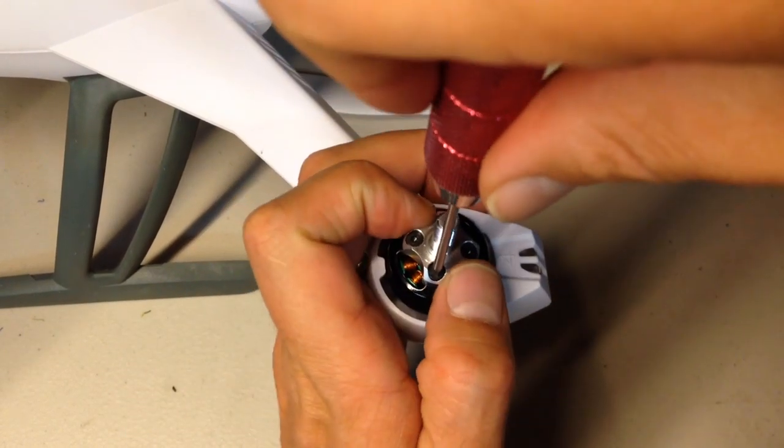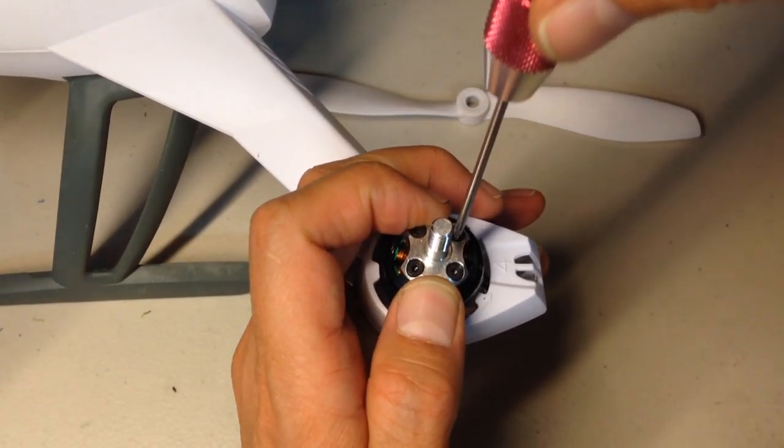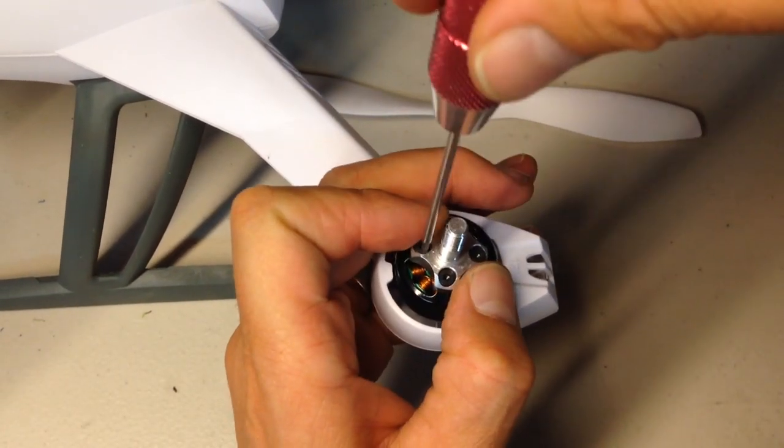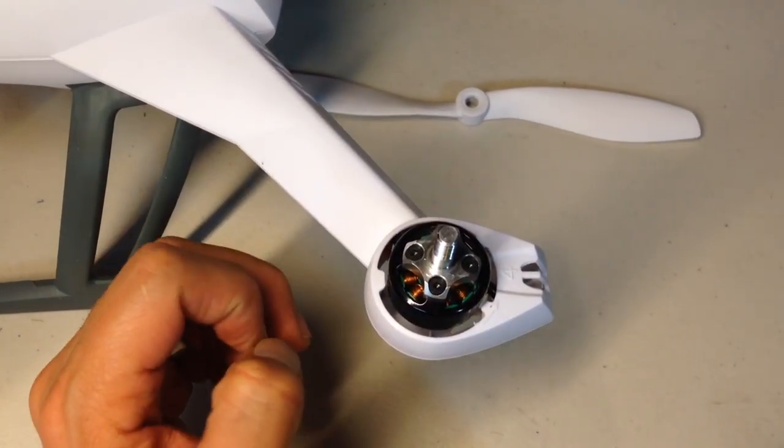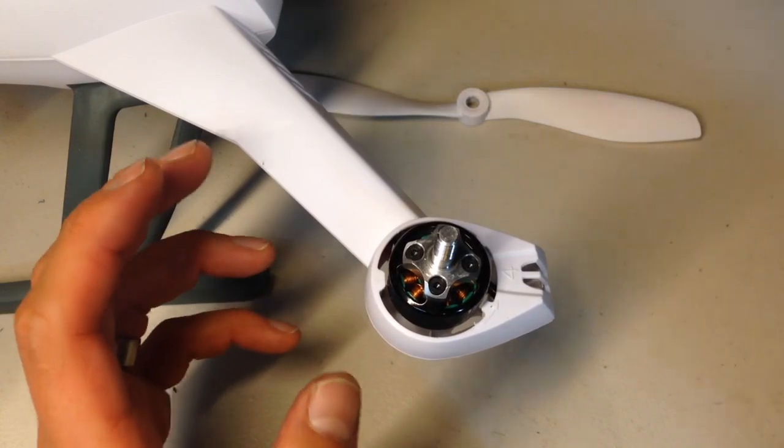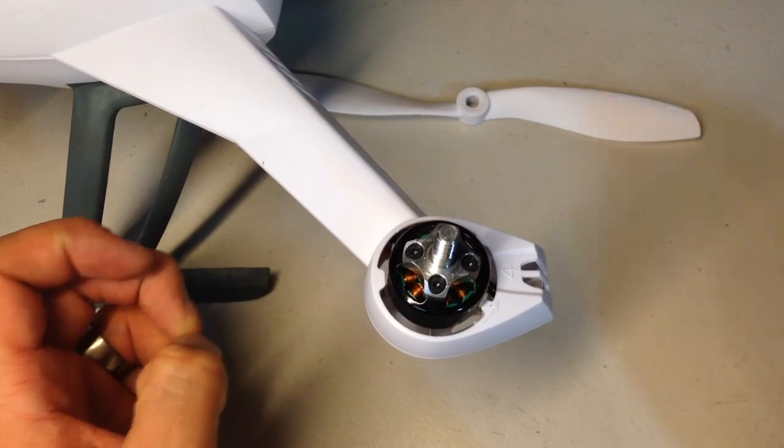All right, once you do that, you're going to give it another eighth of a turn here, maybe a twelfth of a turn here. Just get them all snugged up. I have flown this craft without putting Loctite on the screws, and I did check the screws afterwards, and they were a little bit loose. So I do recommend highly the blue Loctite.